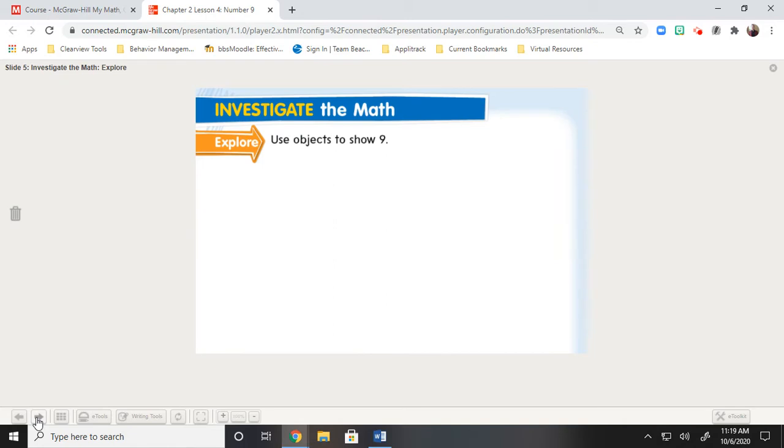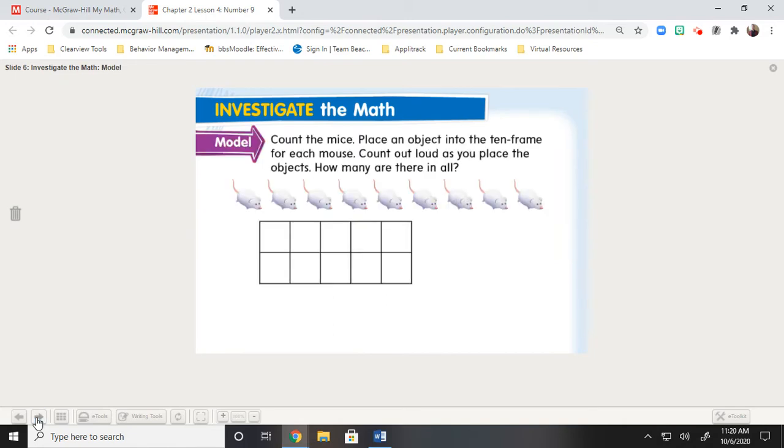It says use objects to show number 9. So, count the mice. Place an object into the ten frame for each mouse. So, actually, let's do that. Let's get the counters again. I'm going to use blue. So, I need to count. Let's see. 1, 2, 3. Uh-oh. I'm losing track. Oh, no. What do I do?